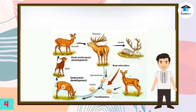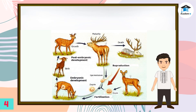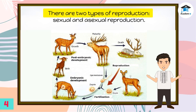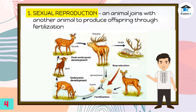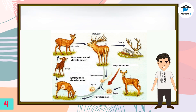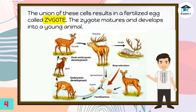What is reproduction? Reproduction is the process by which an animal generates offspring. There are two types of reproduction: sexual and asexual reproduction. Sexual reproduction is the process wherein an animal joins with another animal to produce offspring through fertilization. Fertilization is the process where a sperm cell from the male animal unites with an egg cell from the female animal. The union of these cells results in a fertilized egg called a zygote. The zygote matures and develops into a young animal.